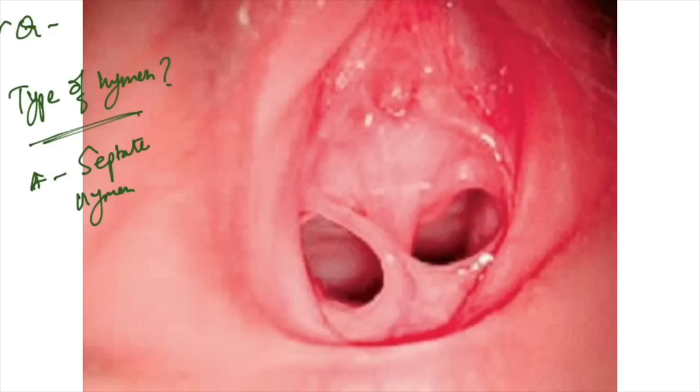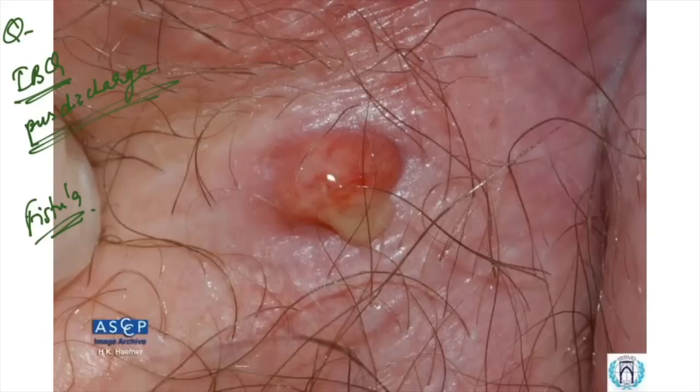This image was given asking which type of hymen is this. You can see a septum in between, so this is septate hymen. Image-based question with frequent purulent discharge from a sinus in perianal area with frequent complaints. What can be the diagnosis? It is fistula in ano for sure.